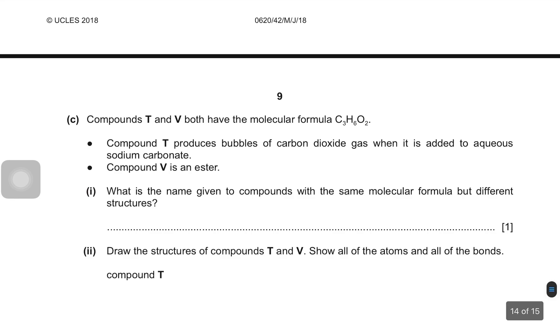Compound T and V both have the molecular formula C3H6O2. Compound T produces bubbles of carbon dioxide when it is added to aqueous sodium carbonate. This test that produces bubbles of carbon dioxide with sodium carbonate means T is an acid. Compound V is an ester. They have already mentioned V is an ester. What is the name given to compounds with the same molecular formula but different structures? So that's going to be isomers.